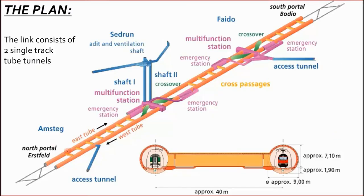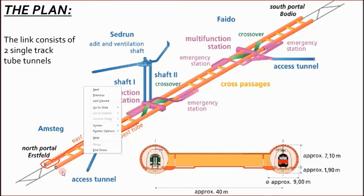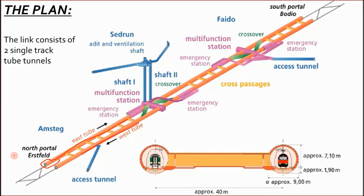Looking at the plan, you can see the two tubes — one east and one west, each with a single track only. So in the east tube there is one railway line, and in the west tube there is another. The north side is Erstfeld and the south side is Bodio. In between you have the intermediate stations at Sedrun and Faido.